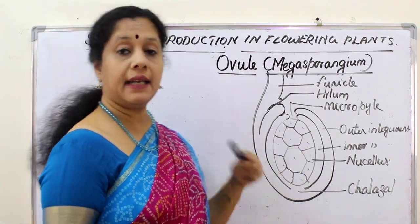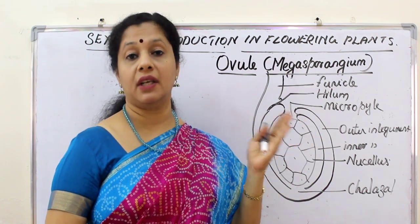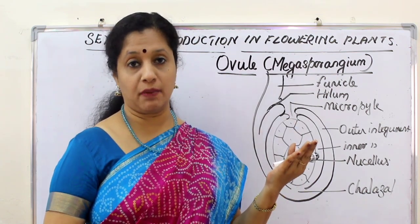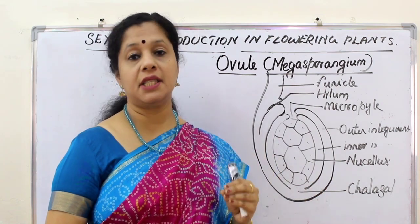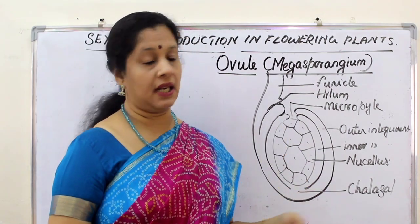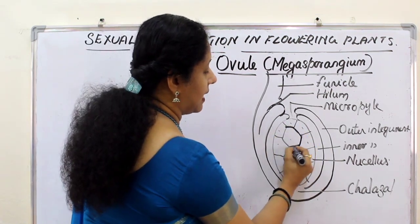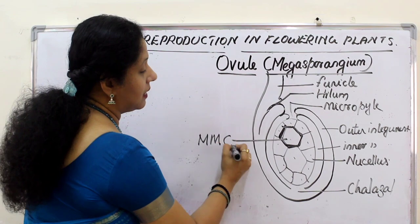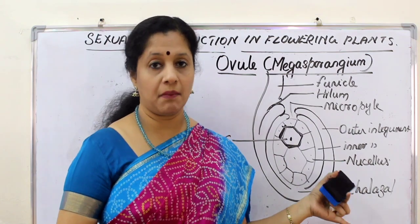In the case of pollen grains, all cells in the sporogenous tissue — the pollen mother cells — were capable of producing pollen grains, because males need to produce large numbers of gametes. But in females the case is different — we do not want that many. We want only a very limited number, or just one. Therefore, not all cells need to become the megaspore mother cell. Only one cell toward the micropylar end will become the megaspore mother cell.